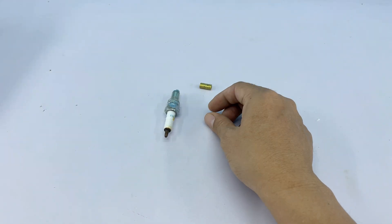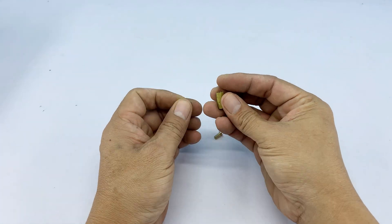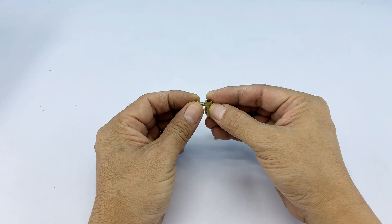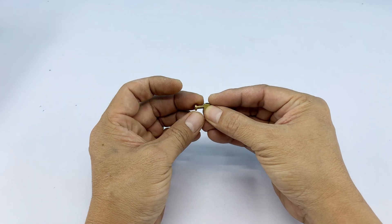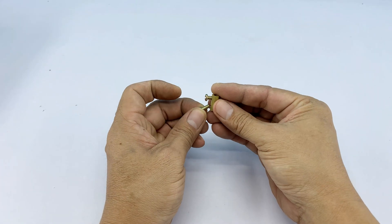And to get things started, we're working with very familiar items, a spark plug and a simple metal single phase connector. Nothing fancy, just the essentials. This connector will act as the middleman, linking the welding tip to the threaded end of the spark plug.